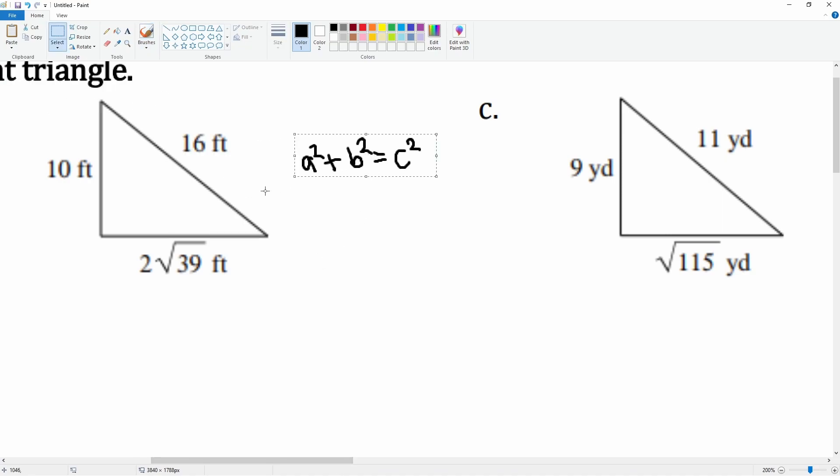Here's the equation from before. Let's plug in the values: a can be equal to 10, b can be equal to 2 radical 39, and c equals 16.